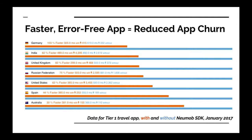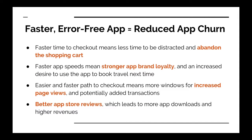A different app — a Tier 1 travel bookings app — saw a really strong increase in speed across multiple countries. They were 103% faster in Germany with the Numob SDK turned on, and 82% faster in India. For a travel or commerce app in particular, those gains have great business KPI impacts: faster time to checkout means less time to be distracted and abandon your shopping cart; faster app speeds overall means stronger brand loyalty and an increased desire to use the app next time; giving customers an easier path to checkout means more page views and potentially more transactions. And finally, this leads to better app store reviews, which leads to more app downloads and higher revenues.